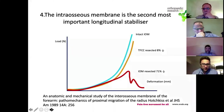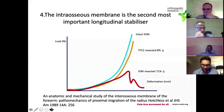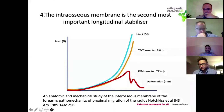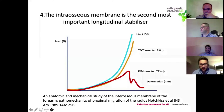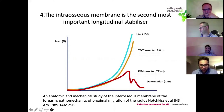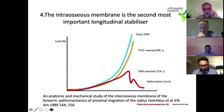If you simply resect the TFCC - and we are all familiar with its importance for rotational stability - there is only an 8% reduction in the ability of the two bones to resist deformation. However, if you resect the intraosseous membrane there is a massive 71% reduction in the overall ability of the two bones to resist load, and diastasis occurs with much less force.